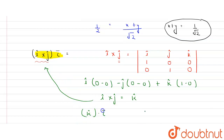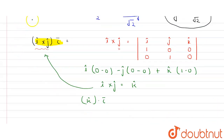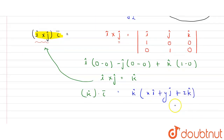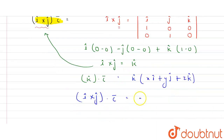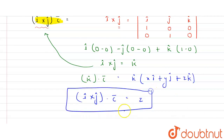Substituting back, the expression becomes k̂ · c = k̂ · (xî + yĵ + zk̂). Taking the dot product, only the k̂ component survives, so the value of the entire expression equals z. We simply need to find the value of z.